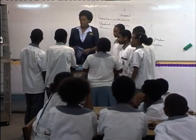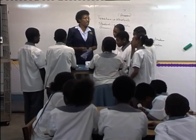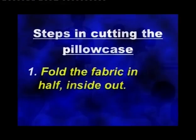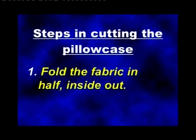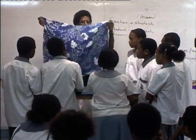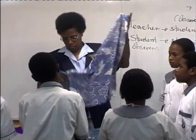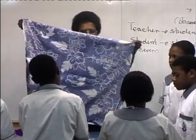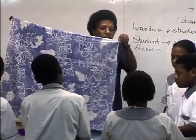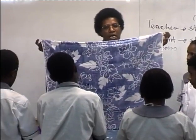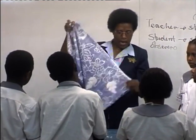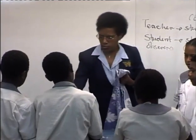If I can have the class to read for us the first step. Fold the fabric in half, inside out. That's my fabric. Now, I'm going to fold this fabric inside out, meaning the inside comes out. So the first step is to fold the fabric in half, inside out.